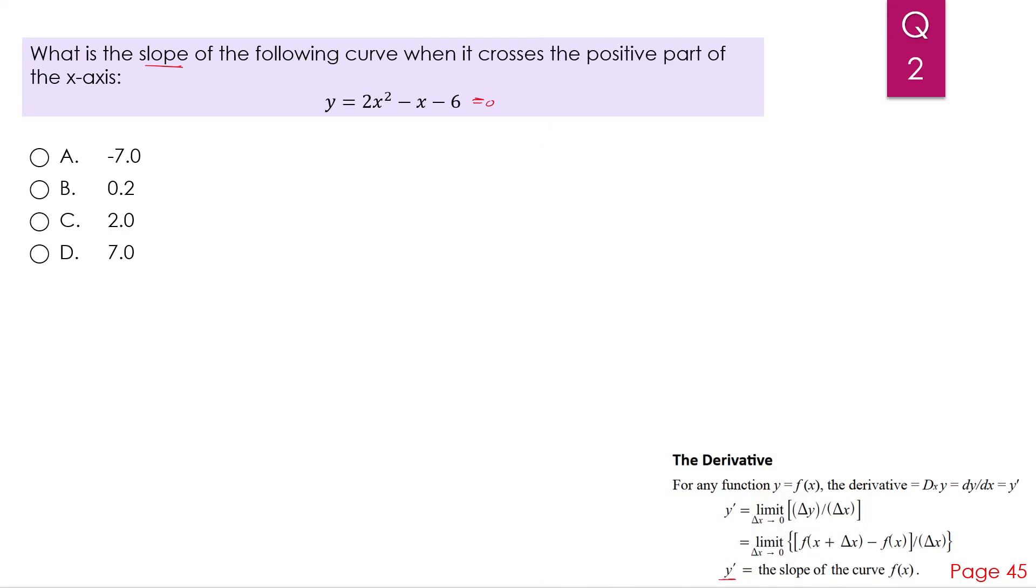And because it's positive, that means our function looks something like that. And this point is negative 1.5, and this point is plus 2. So we need the slope at this point. And like what we said, it's the derivative of our function at that point, which is x equals 2.